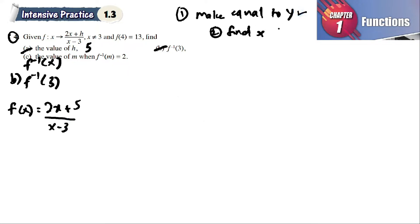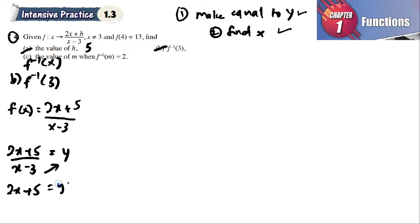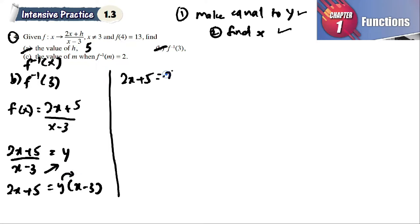To find the inverse function, make it equal to y. So 2x + 5 = y(x - 3). Expand the right side: 2x + 5 = xy - 3y. Now we want to find x, so bring the x terms together.